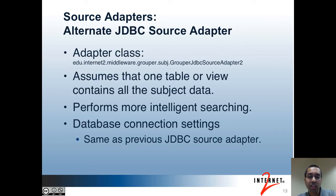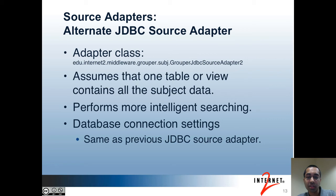The next source adapter is the alternate JDBC source adapter. This assumes that all of the subject data is in one table or view, which eliminates the need to define queries in the sources.xml file. That could be a benefit if your queries would otherwise be complicated and you would rather move all of that logic into your database instead. Another noteworthy difference is how the source adapter performs searches — I'll talk a bit more about that in a couple of slides.